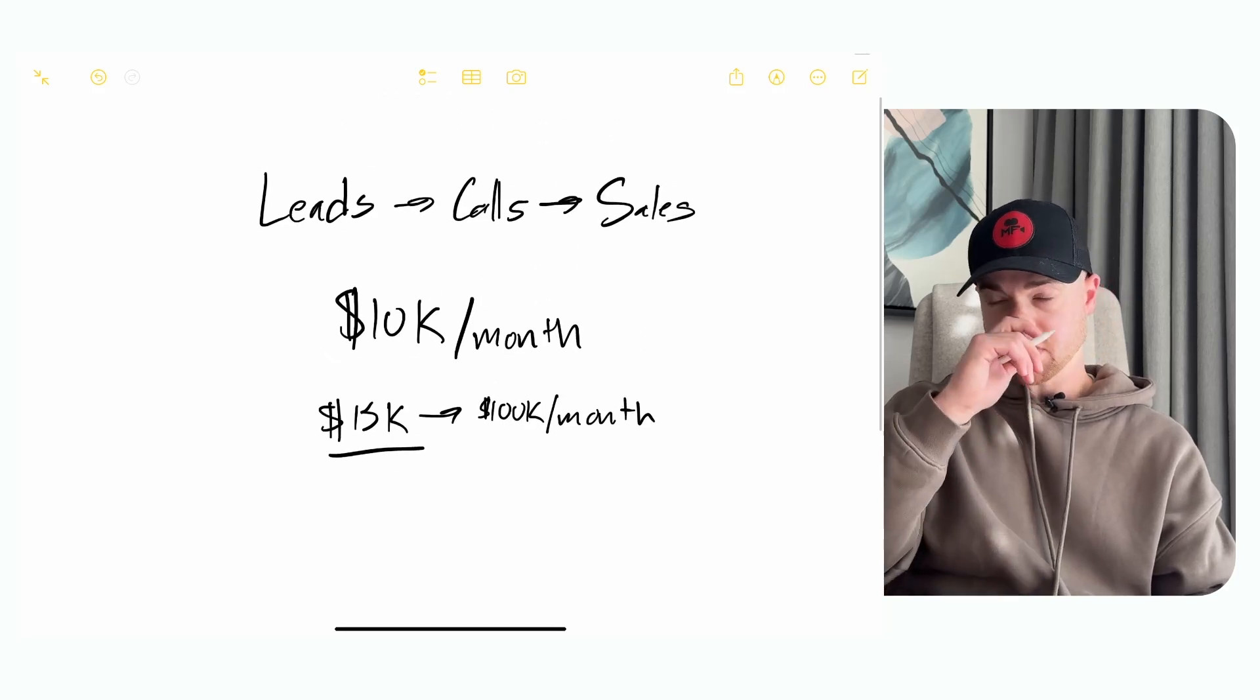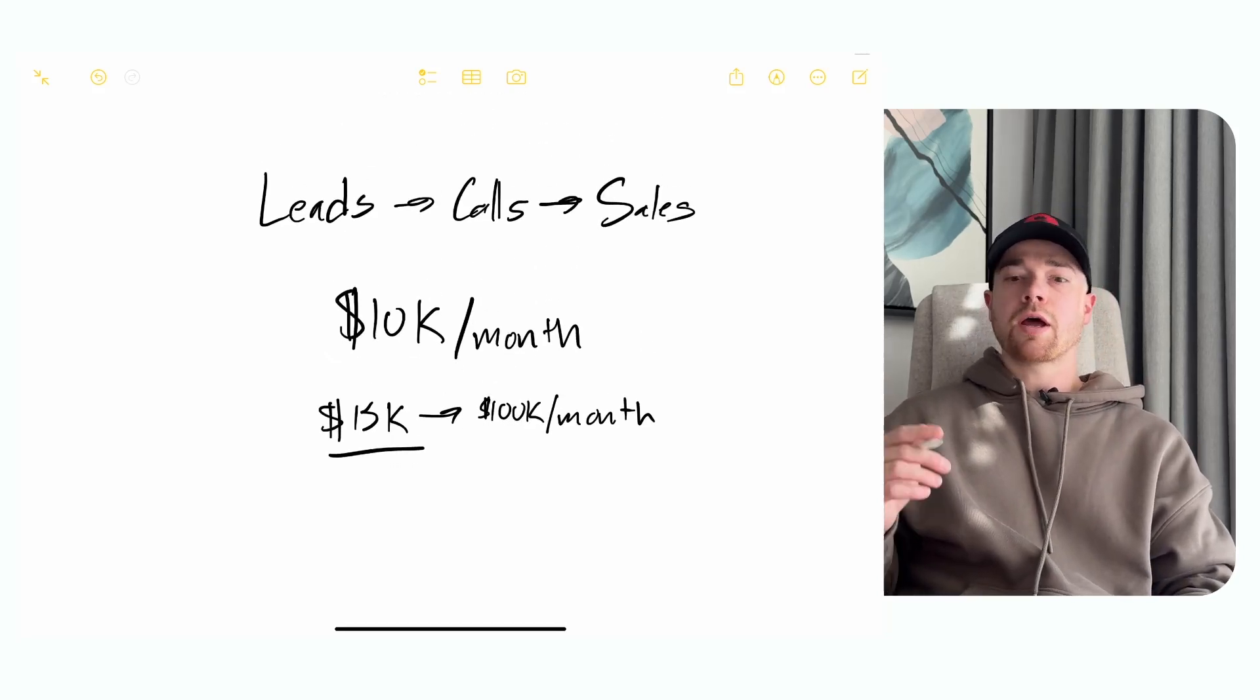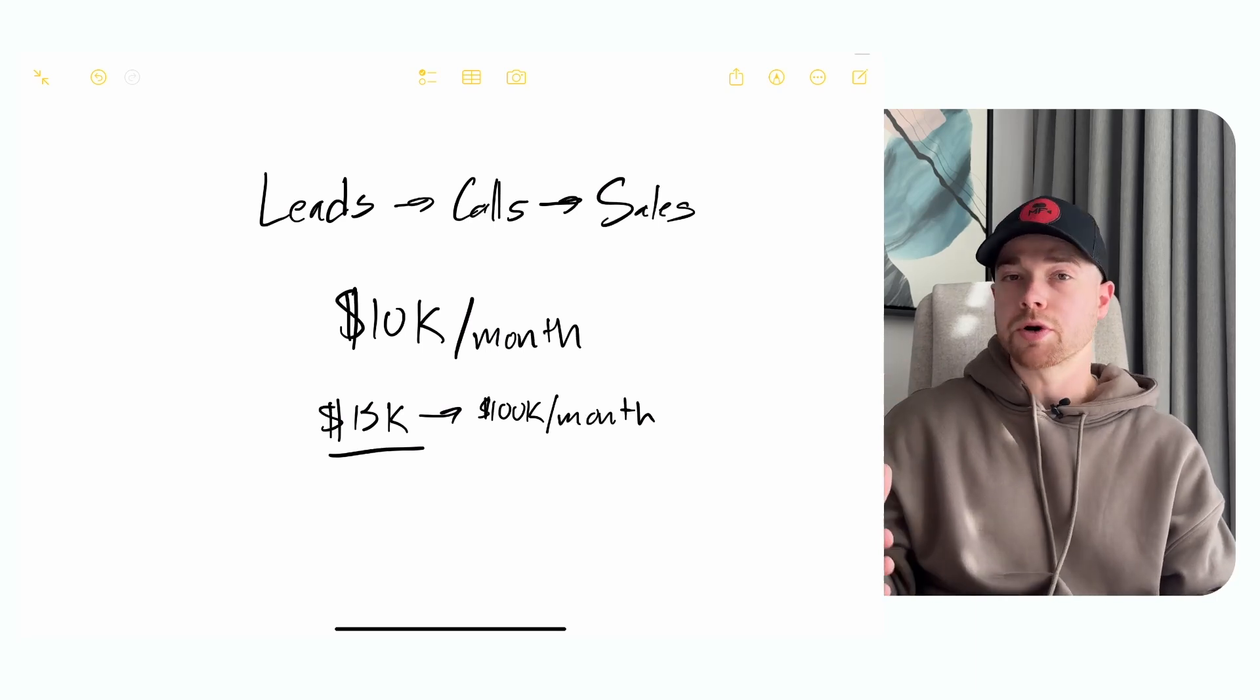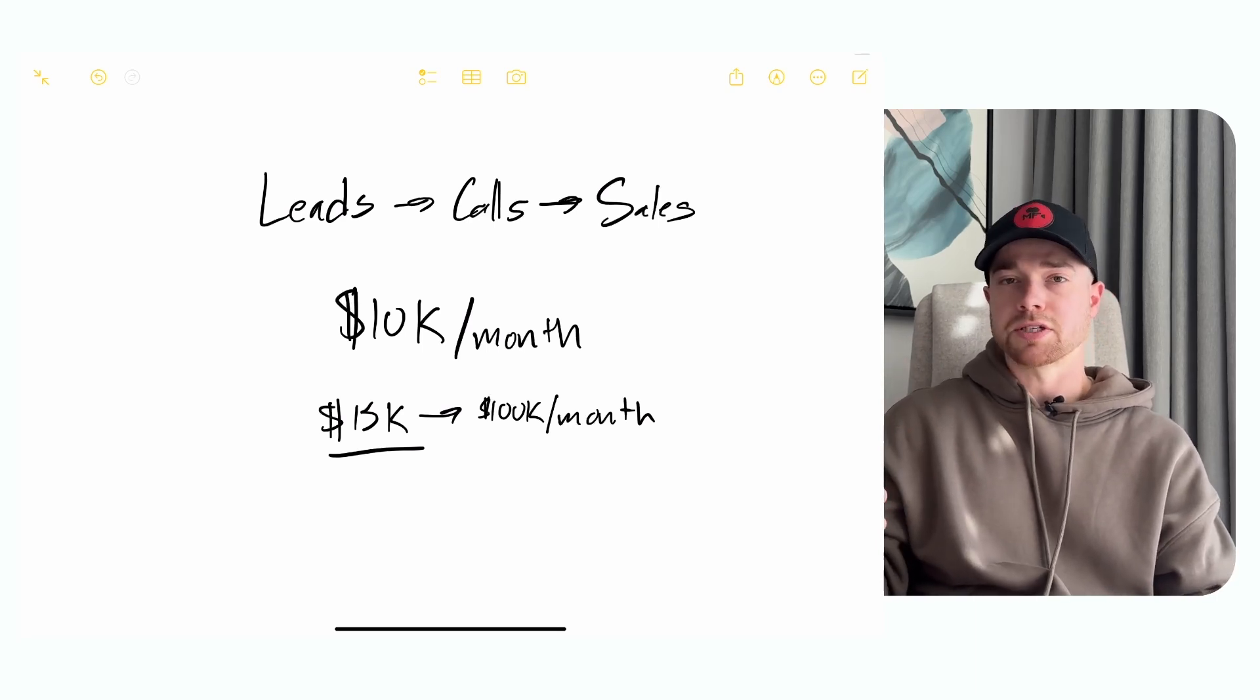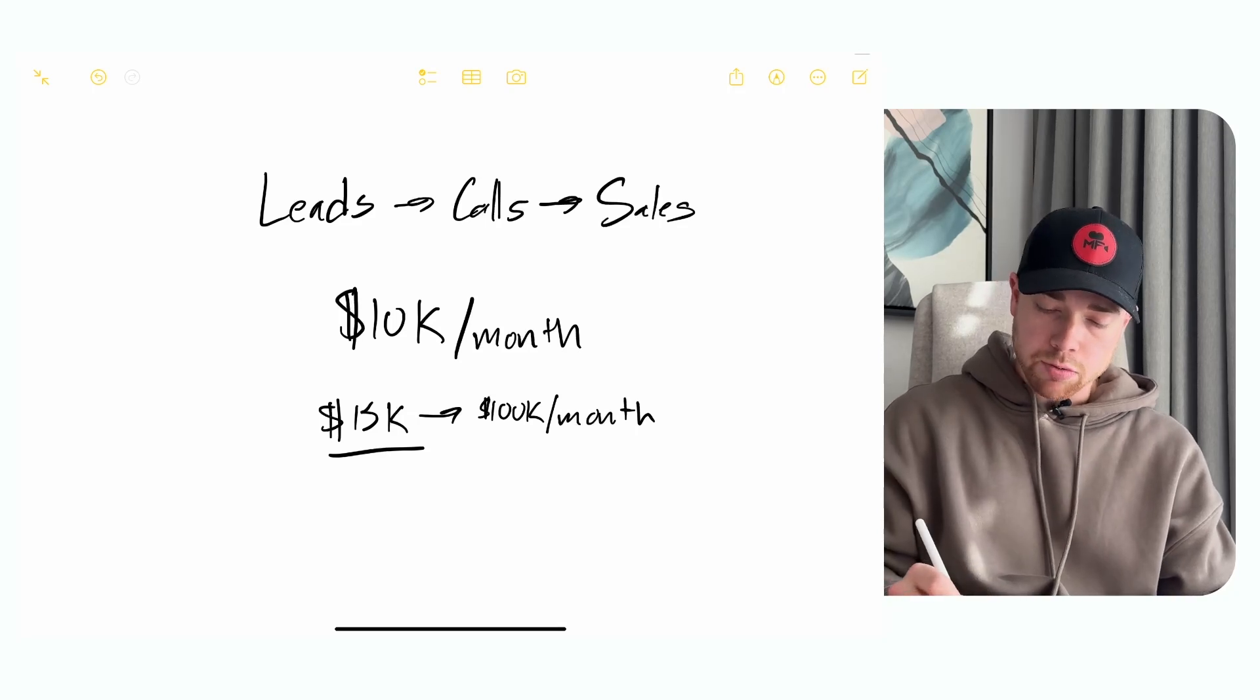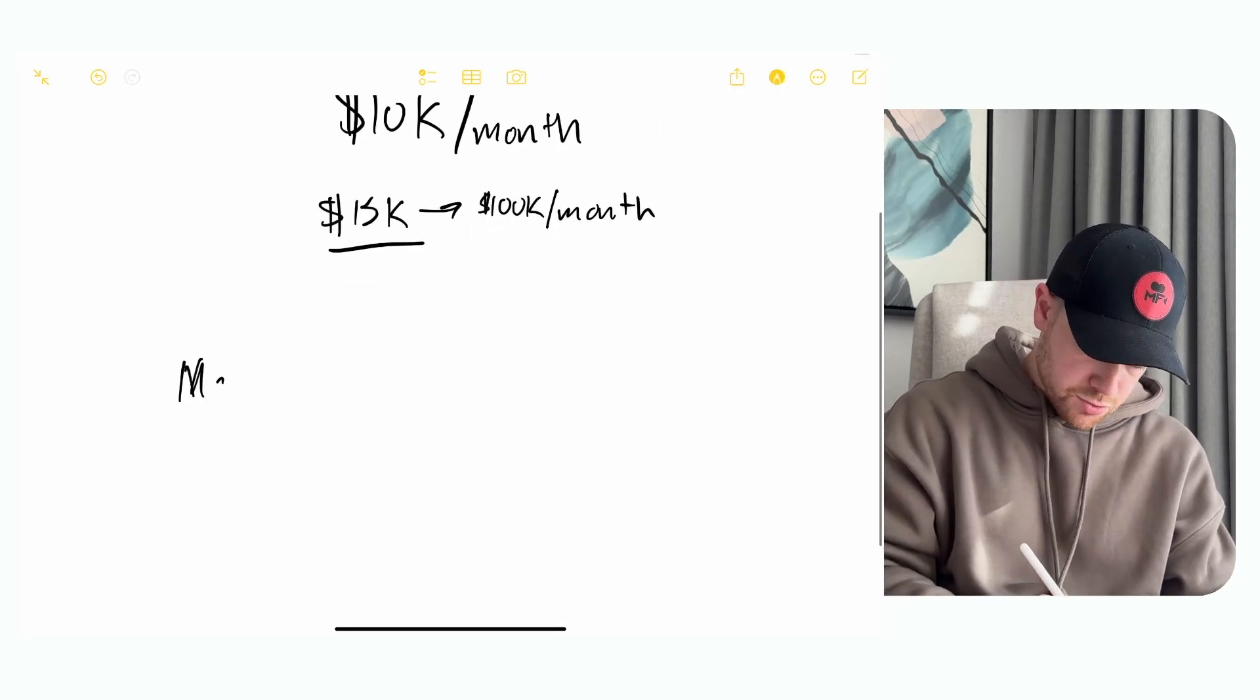What a lot of people do when they're at 10 to 15k a month is they focus on how can I make better work, better quality content, better video, when that's not really the problem. So there's three main pieces of every business: there's marketing, there's sales, and there's fulfillment.